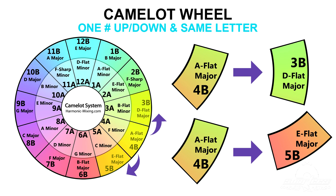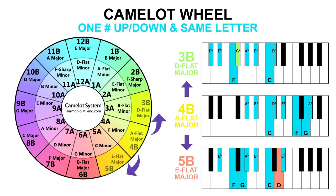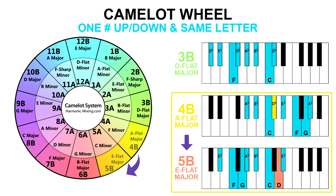However, if your song is 4B A-flat major, which is in the outer major ring of the wheel, then you can mix it into another song that's either 3B D-flat major or 5B E-flat major. The reason these keys mix well harmonically is because the key in the middle — in this case 4B A-flat major — shares six of the same notes and only has one note difference in its seven-note scale from the keys that are one step next to it, either left or right: 3B D-flat major and 5B E-flat major.